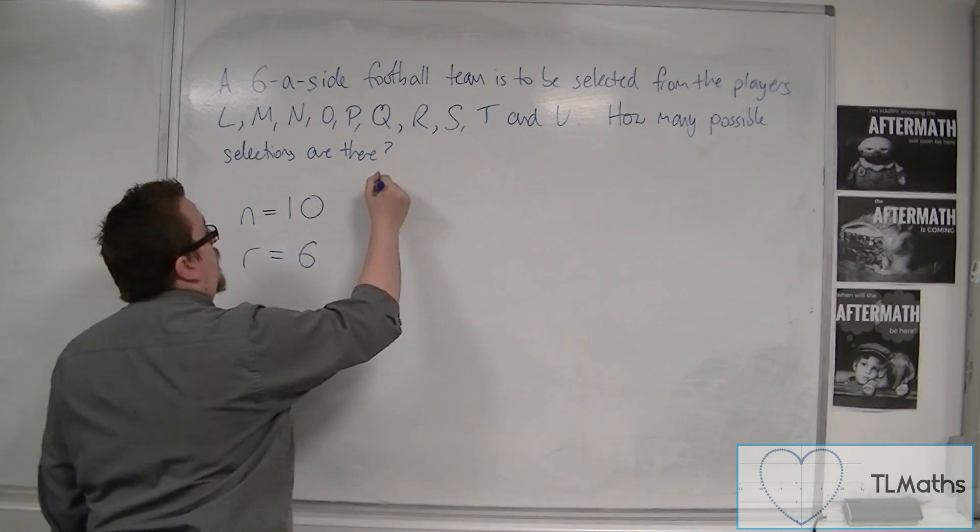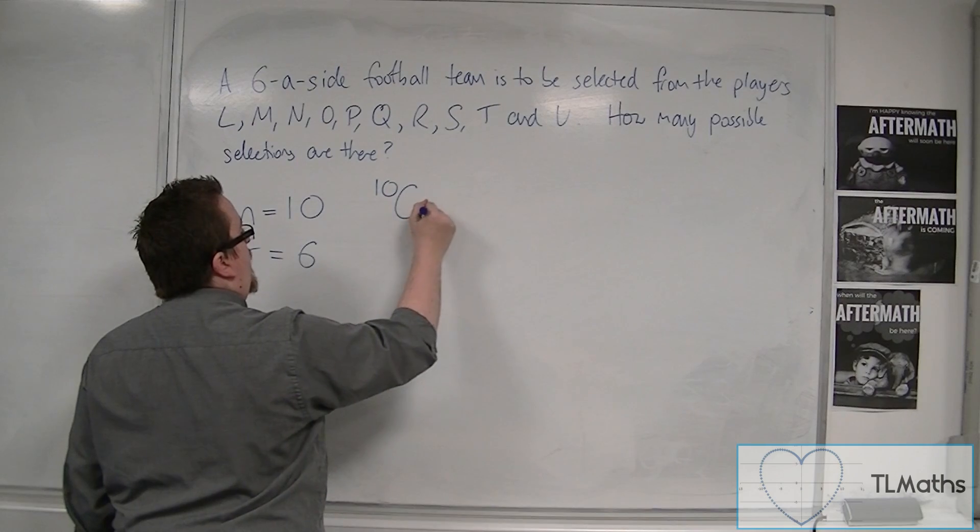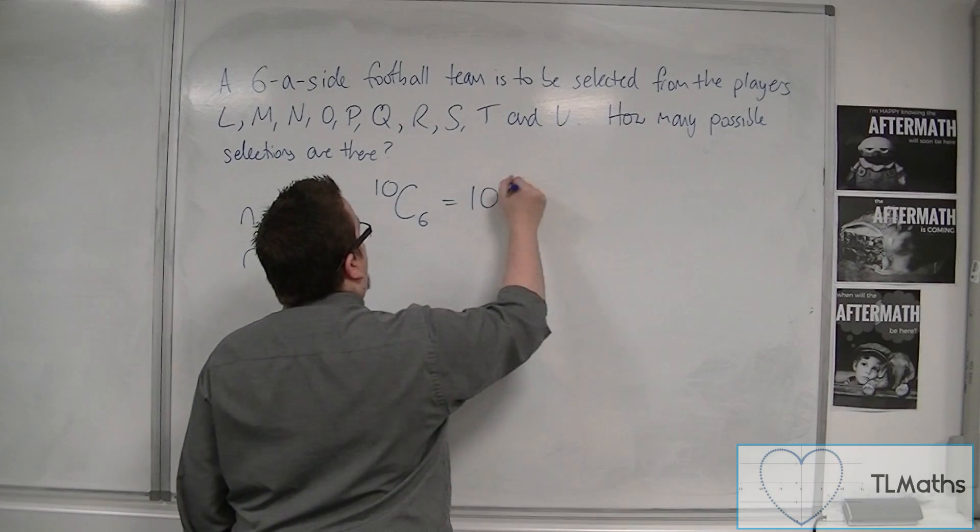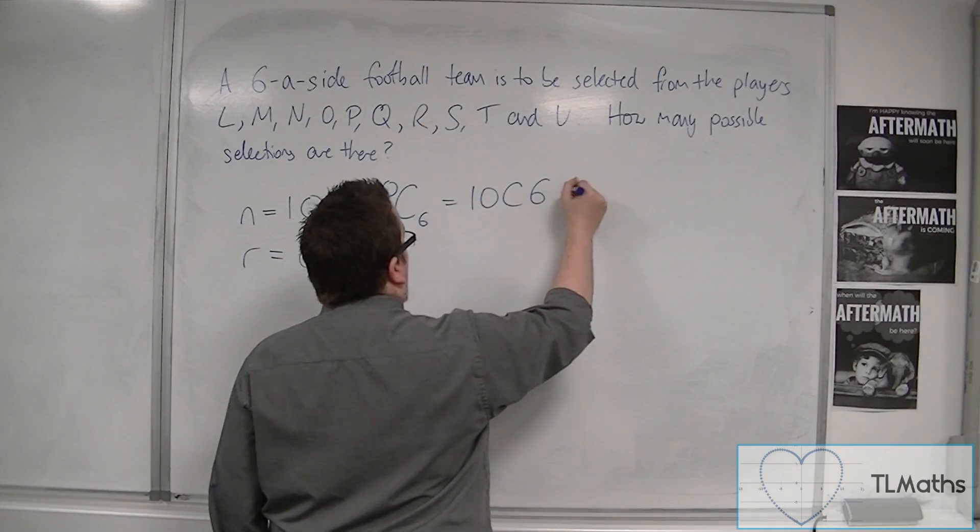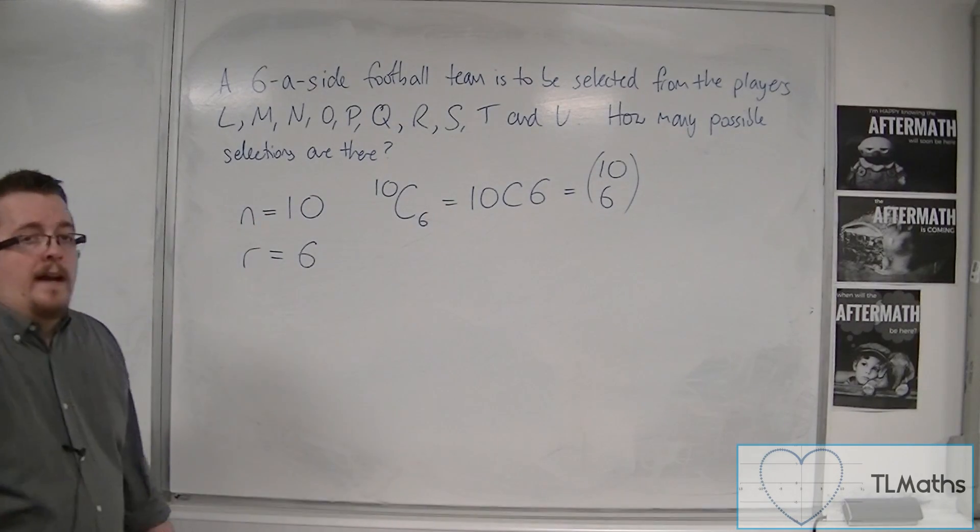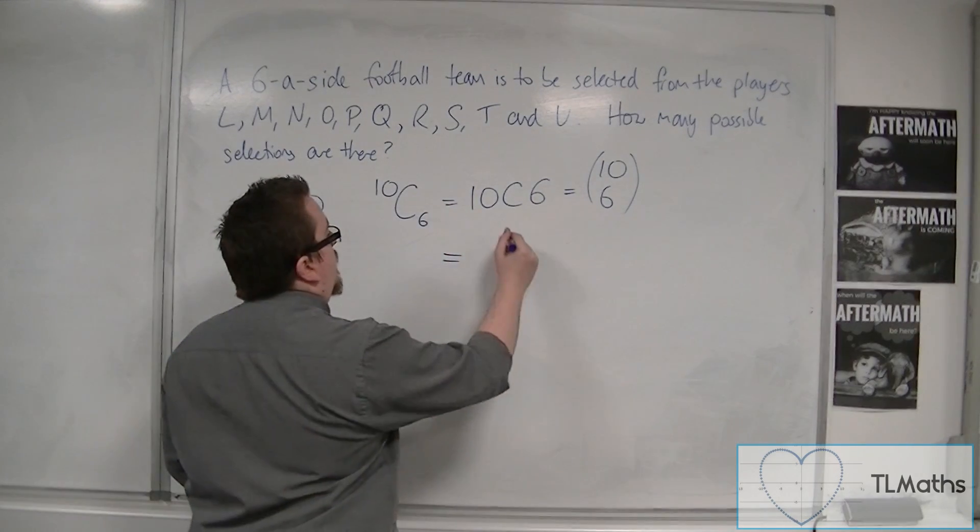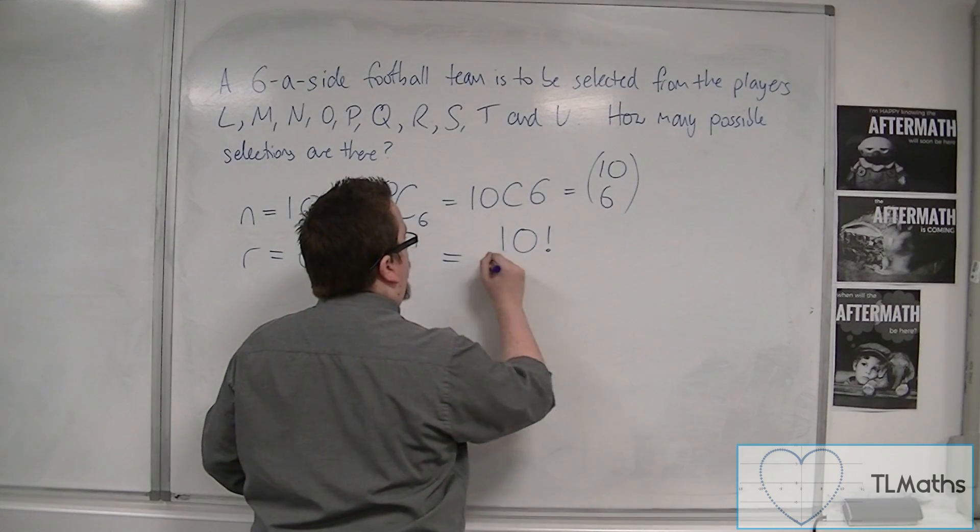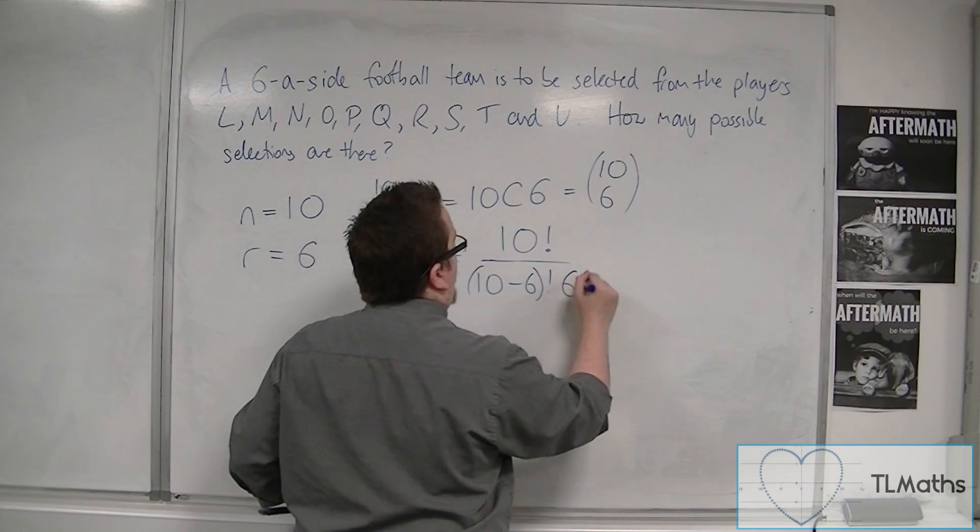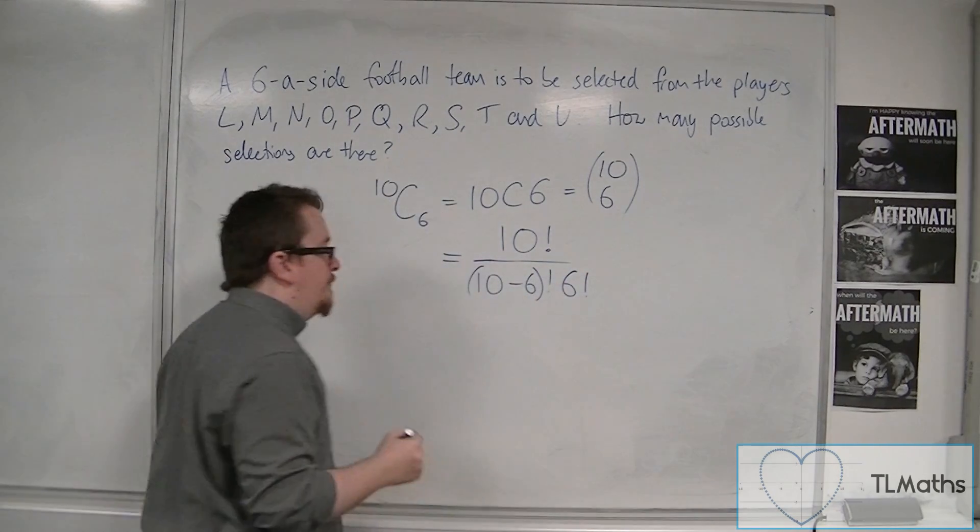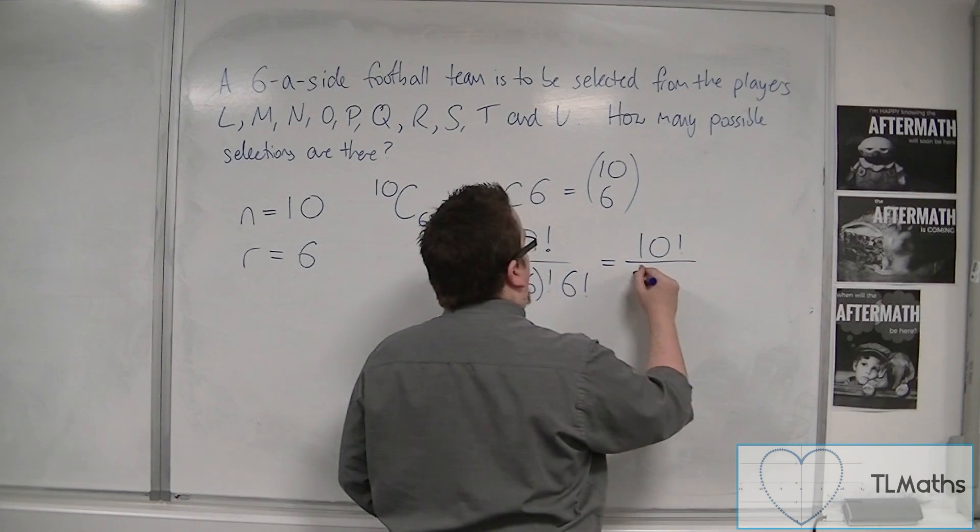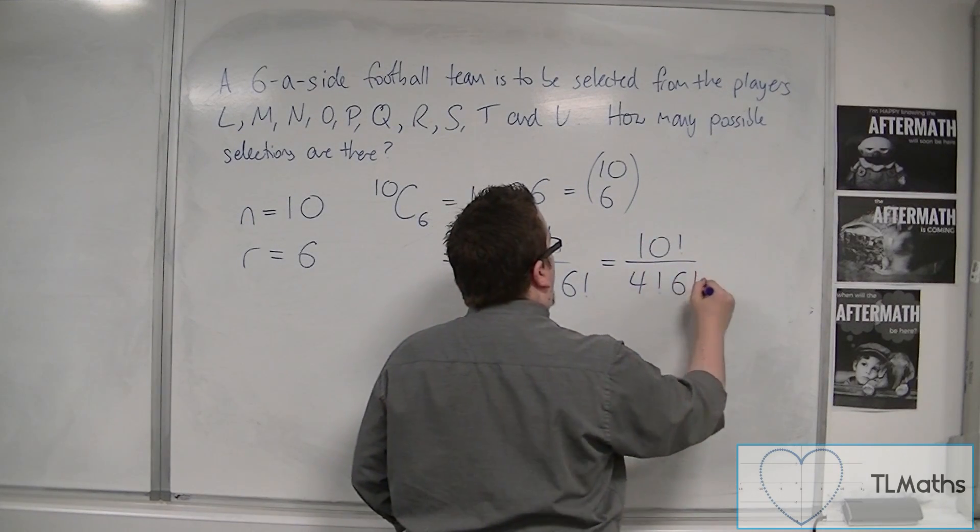So I need to work out 10C6, which could otherwise be written as 10C6 or 10C6 like that. And it uses the formula 10 factorial over 10 minus 6 factorial times 6 factorial. So that's 10 factorial over 4 factorial, 6 factorial.